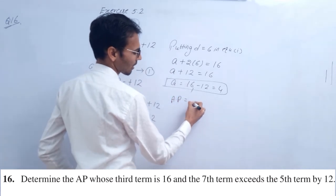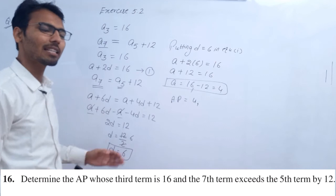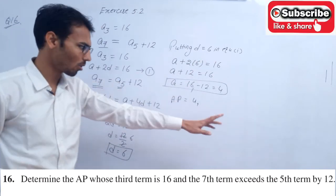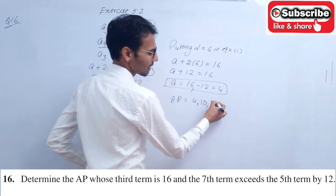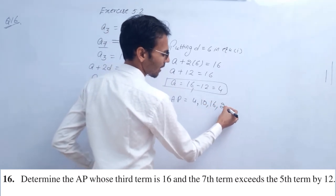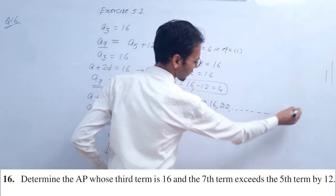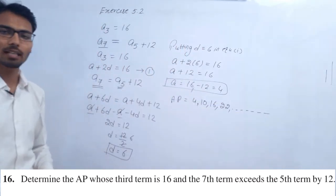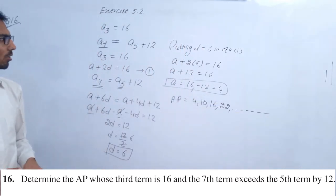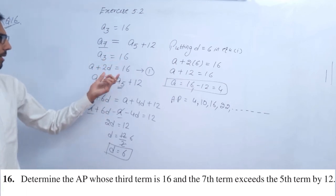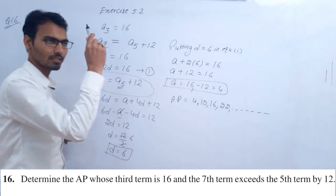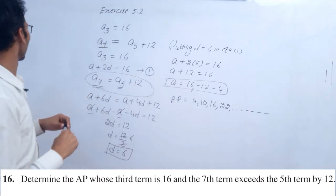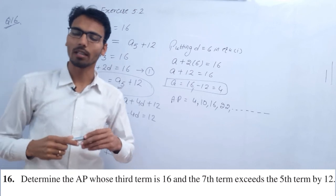First term, second term, keep adding the common difference: a plus d, 4 plus 6 becomes 10, 10 plus 6 is 16, 16 plus 6 is 22, and so on. This is your AP: 4, 10, 16, 22... This is your required AP. I think this is an easy question. This is number 16, exercise 5.2, thank you.